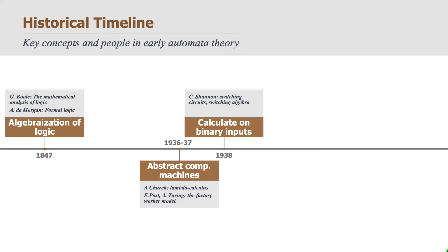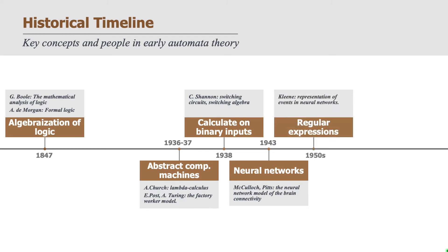About the same time, there was a different type of motivation: the quest to understand the connectivity and functioning of the brain seen as a network of neurons. These neurons would be firing and promoting the activation of their neighbors. All of these were formalized through propositional logic, and the main proponents of this line of work were McCulloch and Pitts, in work done in 1943. A little bit later, in the 1950s, we have Kleene working on representations of events in such neural networks — leading to what we nowadays call regular expressions, used in a lot of work related to pattern matching.